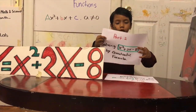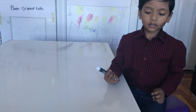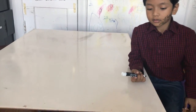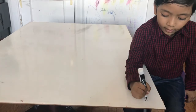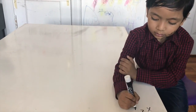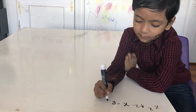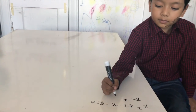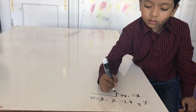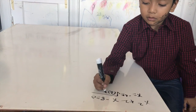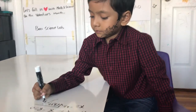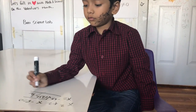I'm going to solve Part 2. Now I'm going to solve it by quadratic formula. X is equal to negative B plus or minus the square root of B squared minus 4AC, all over 2A.